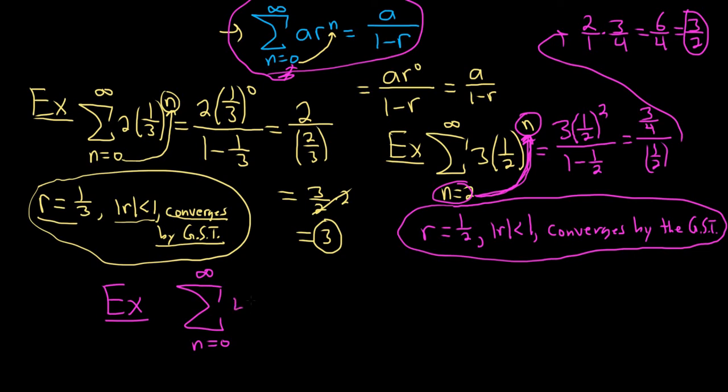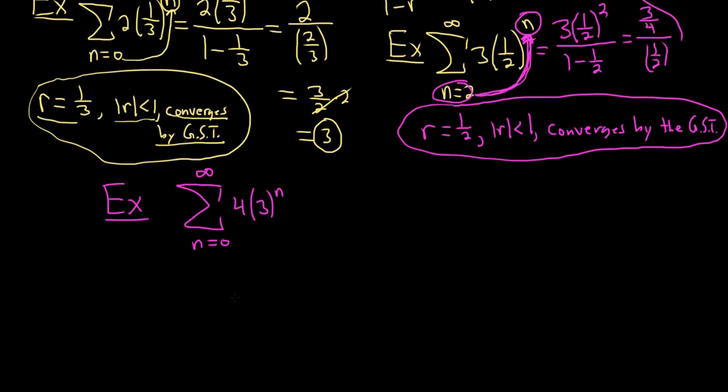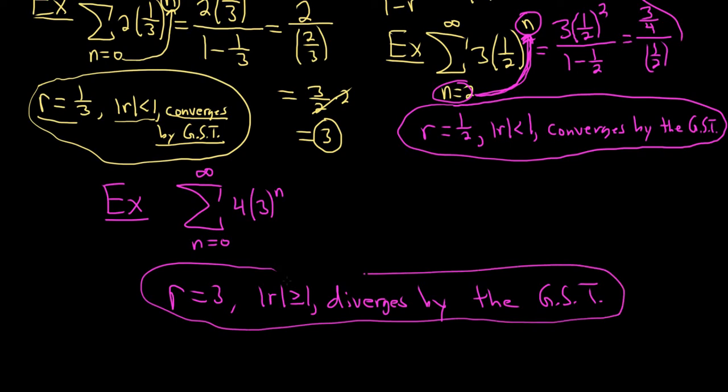How about this one? 4 times 3 to the n. In this case, if the question was does it converge or diverge, your r is 3. That means that the absolute value of r is greater than or equal to 1. So in this case, you would just say diverges by the GST.